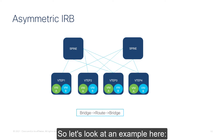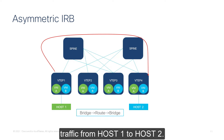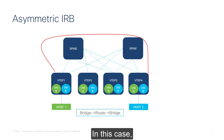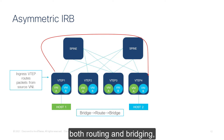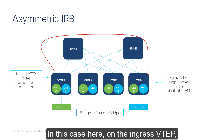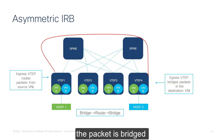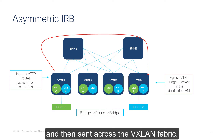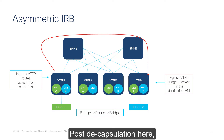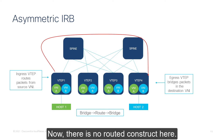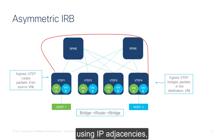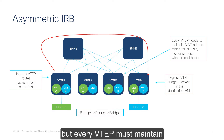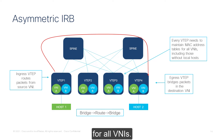Let's look at an example — traffic from host 1 to host 2. Asymmetric IRB uses EVPN purely as a layer 2 overlay. In this case, the ingress VTEP performs both routing and bridging, and the egress VTEP performs only bridging. On the ingress VTEP, the packet is bridged towards the default gateway, then routed into the local subnet and sent across the VXLAN fabric. Post-decapsulation, the packet is simply bridged to the destination endpoint. There is no routed construct here. The routes are still programmed using IP adjacencies, but every VTEP must maintain the MAC address table for all VNIs.